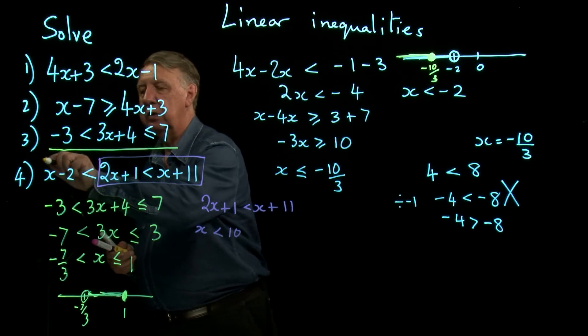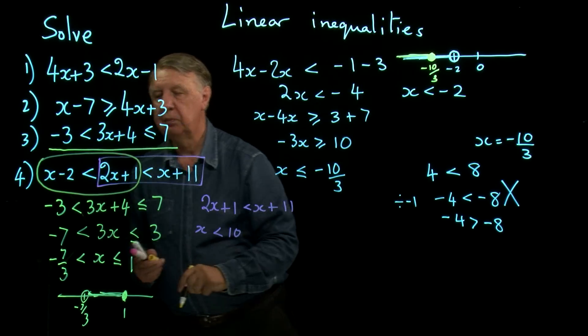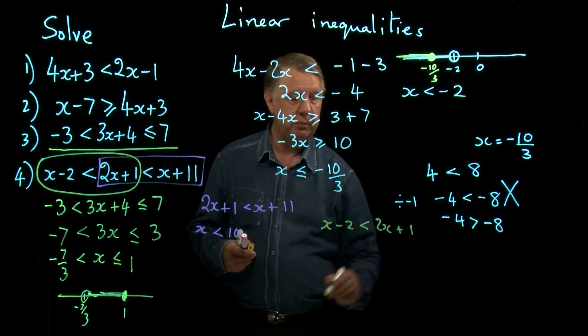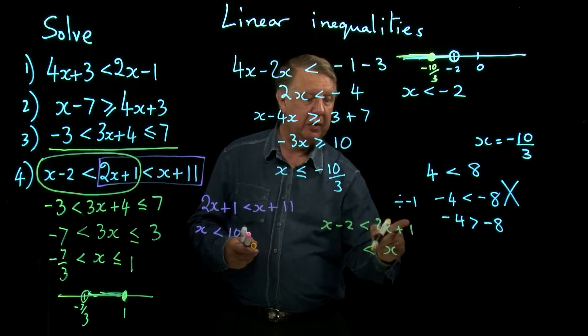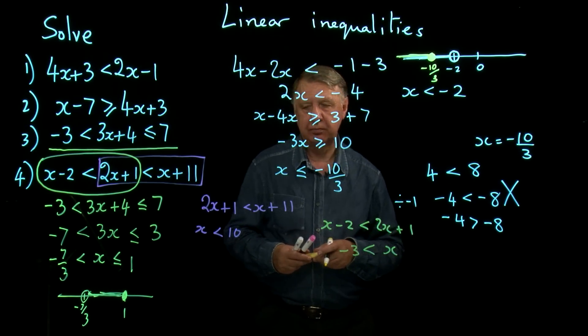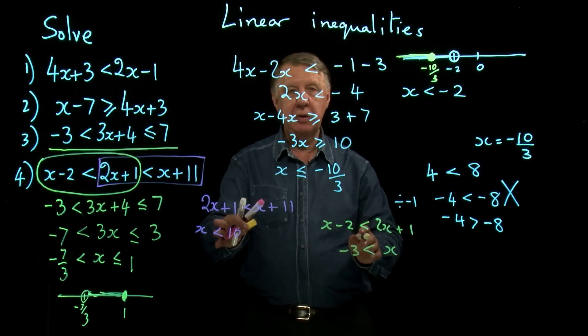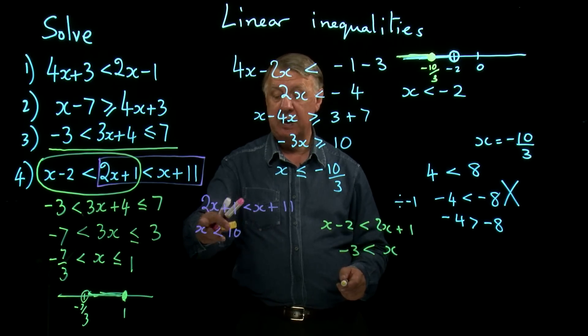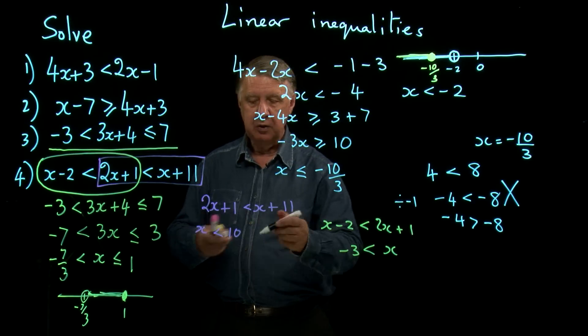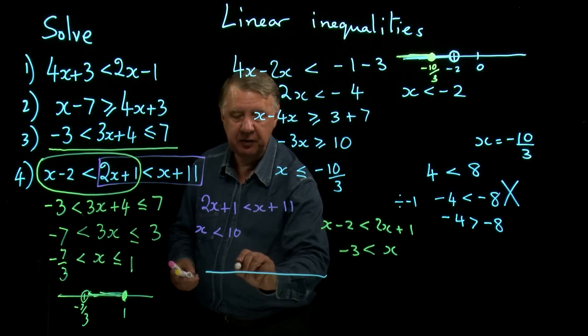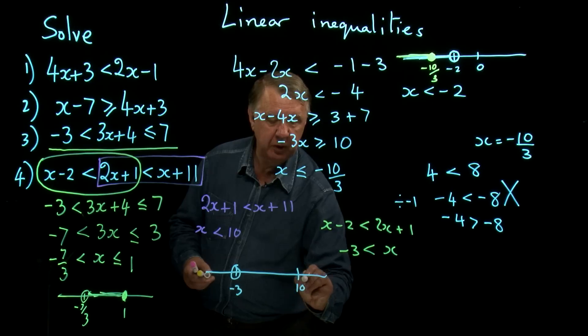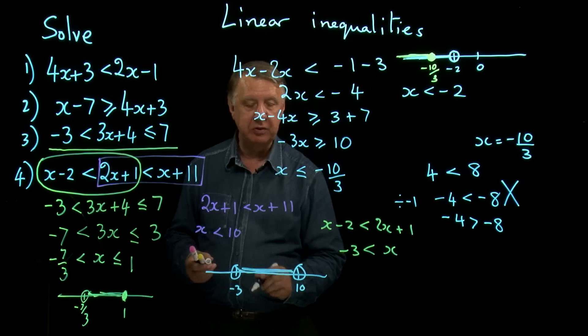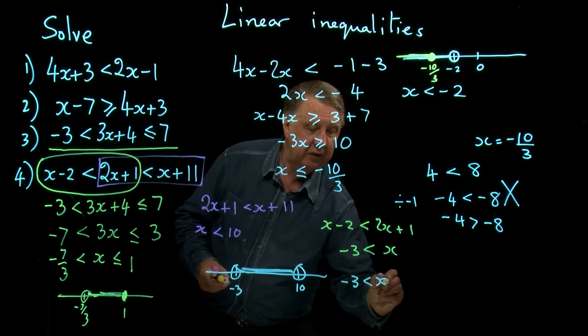Now look at this part. So if I look at that part, x minus 2 less than 2x plus 1. Take x from each side, take 1 from each side, and I get that. Now these are not independent because the whole thing is joined together. So this says that x has to be more than minus 3, but this also says that x has to be less than 10. So the final answer then would be a situation going from negative 3, not inclusive, up to 10, again not inclusive. Thicken it up if you want.